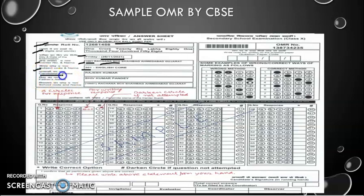Then comes the candidate's name in capital letters and his or her father's name, also in capital letters. The last column in the first section is school code and name. Maybe this year we have our school as the center, so we can have the same center number and school name. But if it's a different school, your center number and school code will be different.